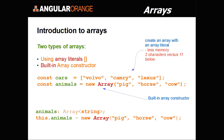With the array literal, you can construct an array by just using the left bracket and right bracket operators and putting elements in the array. Then there's also a built-in array constructor — for example, doing 'const animals = new Array' with pig, horse, and cow, basically creating an array of animals with those items in it.